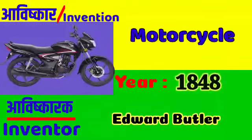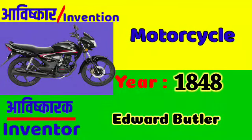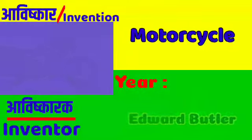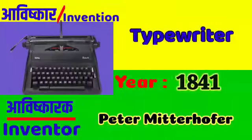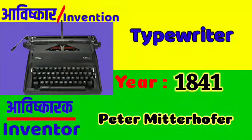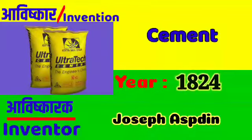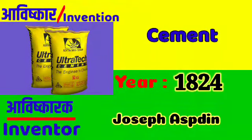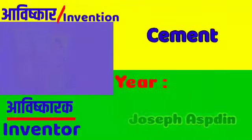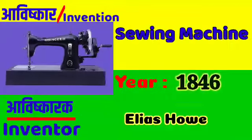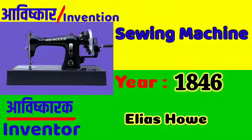Motorcycle: Edward Butler in 1884. Typewriter: Peter Mitterhofer in 1841. Cement: Joseph Aspdin in 1824. Sewing Machine: Elias Howe in 1846.